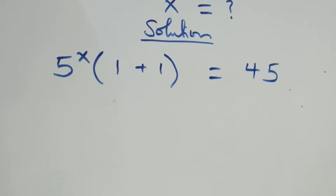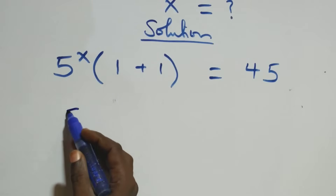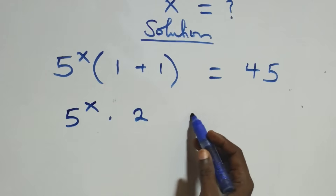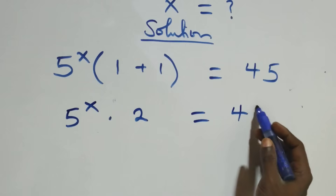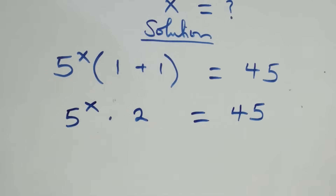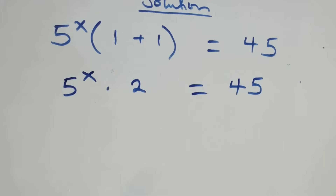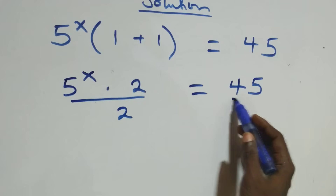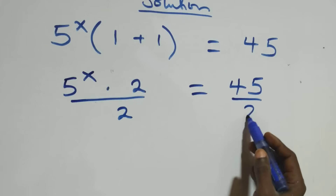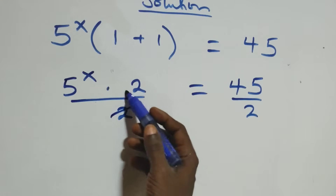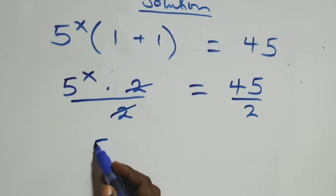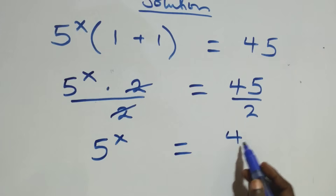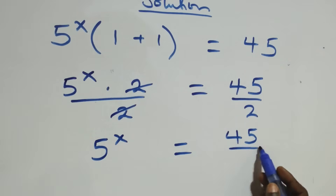At the next step, we have 5 raised to power x times 1 plus 1, that's 2, then equals to 45. The next step, we divide both sides by 2 — divide this side by 2, also divide this side by 2. The twos cancel each other and we have 5 raised to power x equals to 45 over 2.